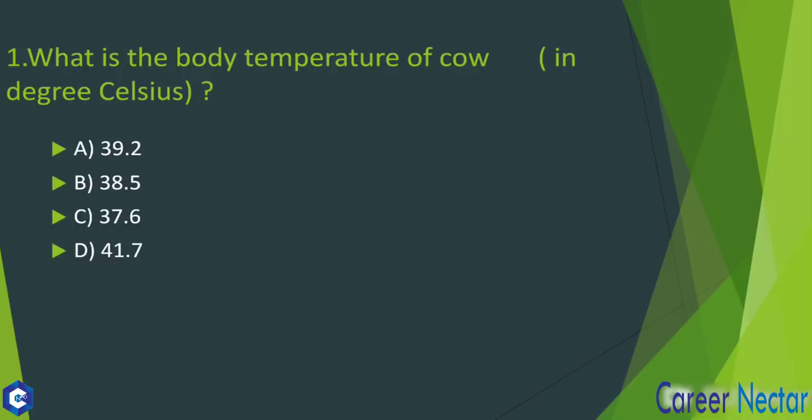So the question is: how much is the body temperature of the cow? You will know that it is 38.5°C. So the answer to this question is option number B. Option number B is the correct answer.